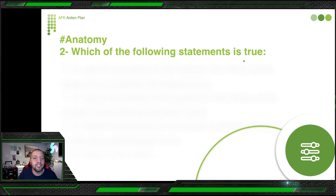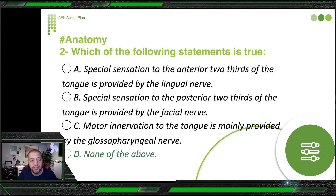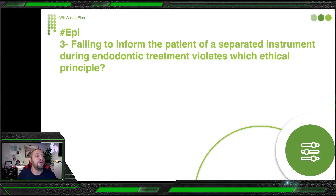Now back to the question: special sensation to the anterior third — no, it comes from facial nerve, not lingual nerve alone. Special sensation to the posterior third — no, it comes from glossopharyngeal, not facial. Motor innervation from glossopharyngeal — no, it's from hypoglossal. Glossopharyngeal is for the posterior one-third sensory. Therefore, none of the above is correct.